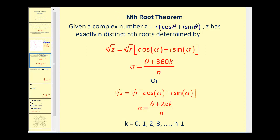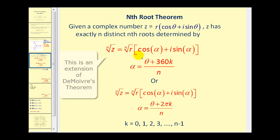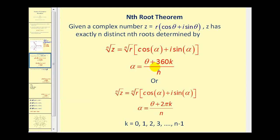Let's now talk about the nth Root Theorem. Given a complex number in trig form, that number has exactly n distinct nth roots determined by this formula. The nth root equals the nth root of r times (cos α + i sin α), where α = (θ + 360°·k) / n. Here n is the number of distinct roots, and k takes on the values 0, 1, 2, … up to n−1. So for fourth roots, k would be 0, 1, 2, and 3; for sixth roots, k goes from 0 to 5. There is a similar formula when using radians.